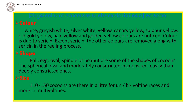Size of the cocoon is indicated by the number of cocoons per liter. There are 110 to 150 cocoons in a liter for univoltine or bivoltine races, and more in multivoltines.